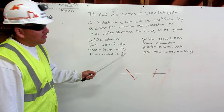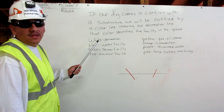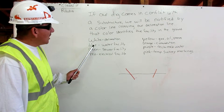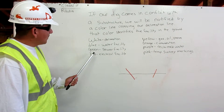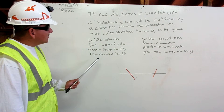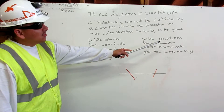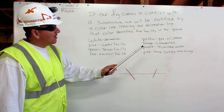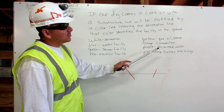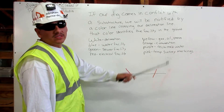Here are the colors that will be in the ground. A white line is our delineation line. A blue line is a water facility. A green line is a sewer facility. A red line is an electrical facility. A yellow line is a gas, oil, or steam facility. Orange is our communications facility. Purple is a reclaimed water facility. And pink is our temporary survey markings.